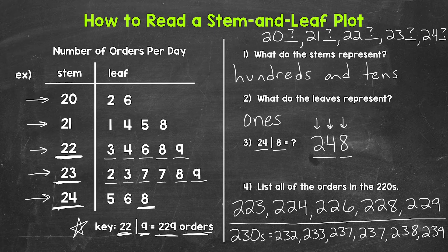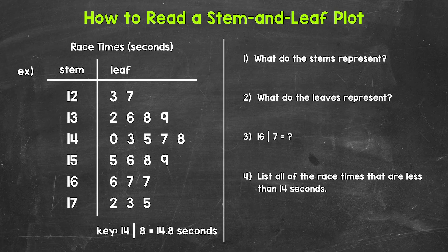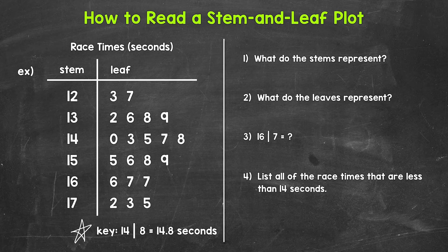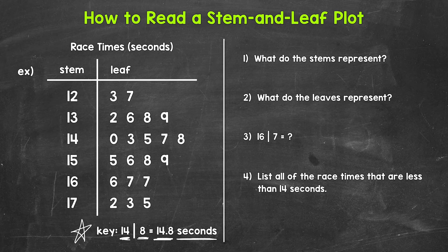Let's move on to our last example — a stem and leaf plot with decimals. We have the race times of the students in, let's say, a high school gym class. Let's look at the key: a stem of 14 and a leaf of 8 equals 14 and 8 tenths, or 14.8. This is labeled seconds because we are working with race times. That tells us that the stems represent the tens place and ones place — the whole number — and the leaves represent the tenths place.